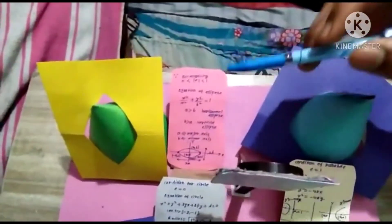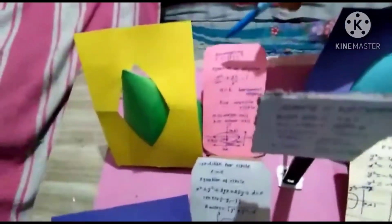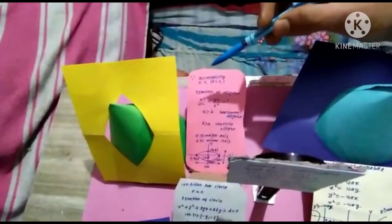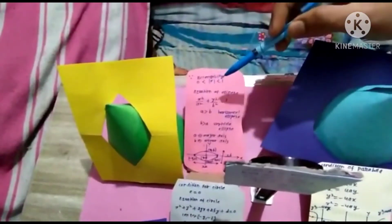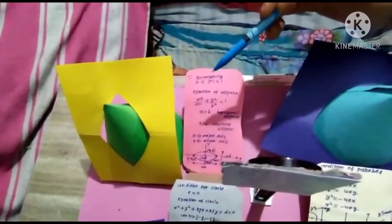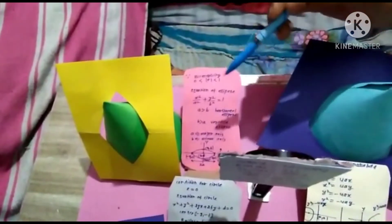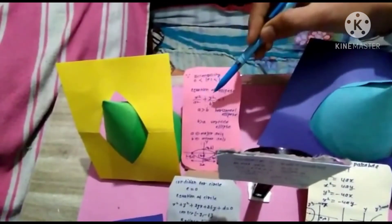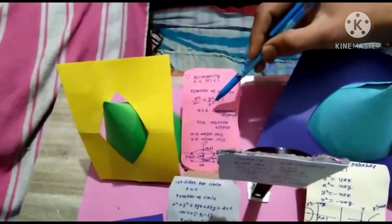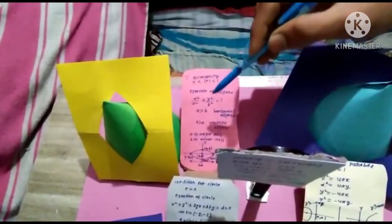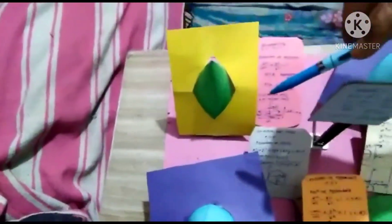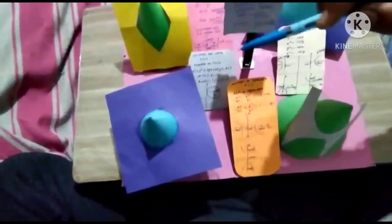And last topic is equation of ellipse. Then this equation has eccentricity greater than 0 and less than 1. Equation of ellipse is x square by a square plus y square by b square is equal to 1. Then we make an ellipse. Thank you sir.